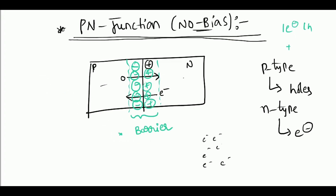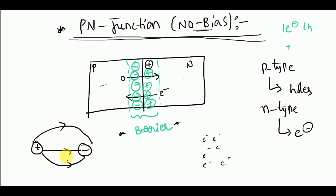Why we call that region the depletion region is the next point to know. If you look at a dipole, it has plus and minus with a field from positive to negative. Similarly, there is a dipole phenomenon happening here, so there will be a potential developed here — called the built-in potential — as it is produced inside the device.